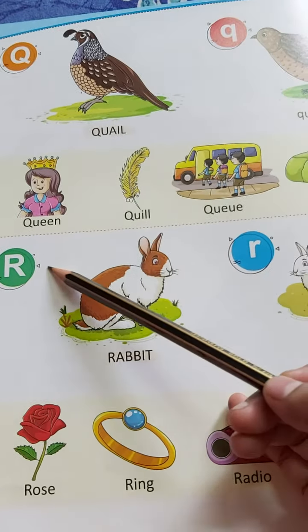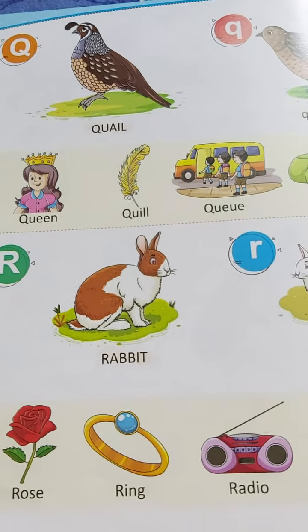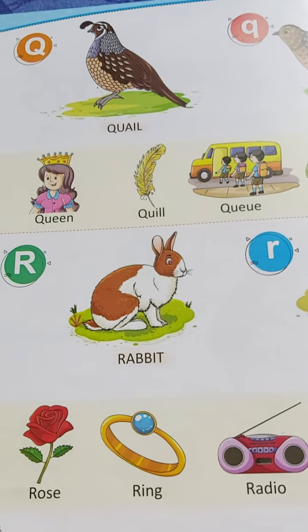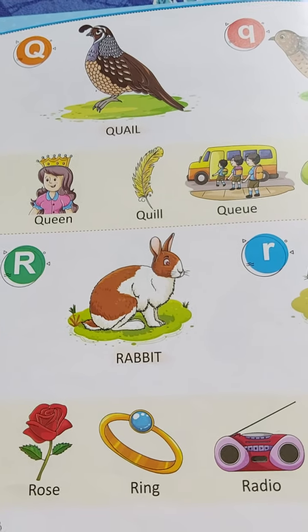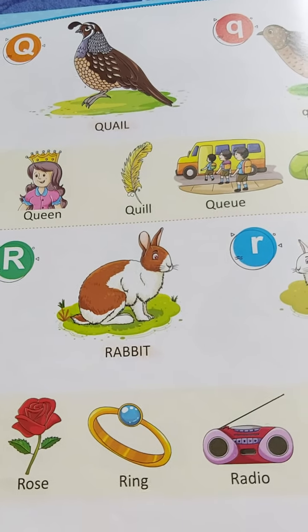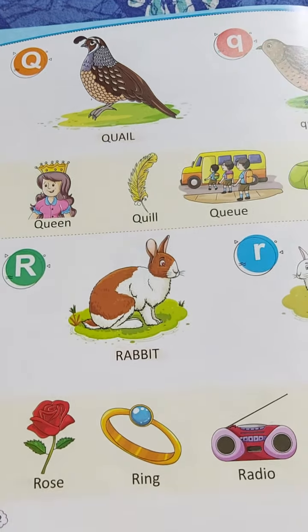You must understand the difference between the Q, small and capital letter, because you have written capital letter and now you are writing small letter A, B, C, D, right?